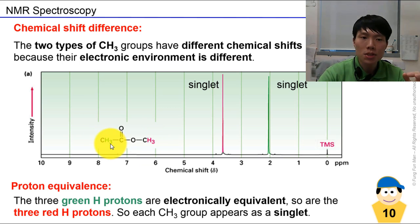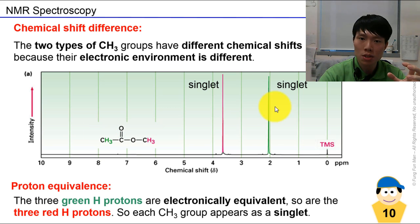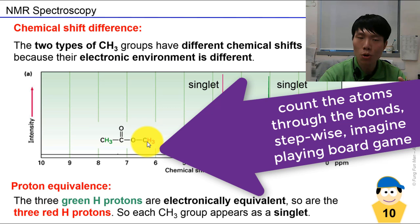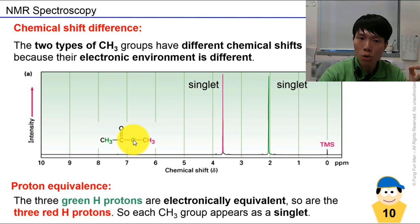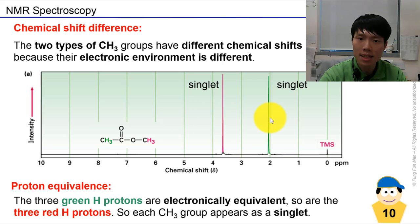We see that there are two kinds of environment here. The three green protons are the same because they all join to the same carbon, so they appear as one signal. The other side — the three protons connected to the other carbon — will also be equivalent. But these two groups are not the same, because this carbon connects to an O whereas the other carbon connects to a C. That's how you tell they're different.